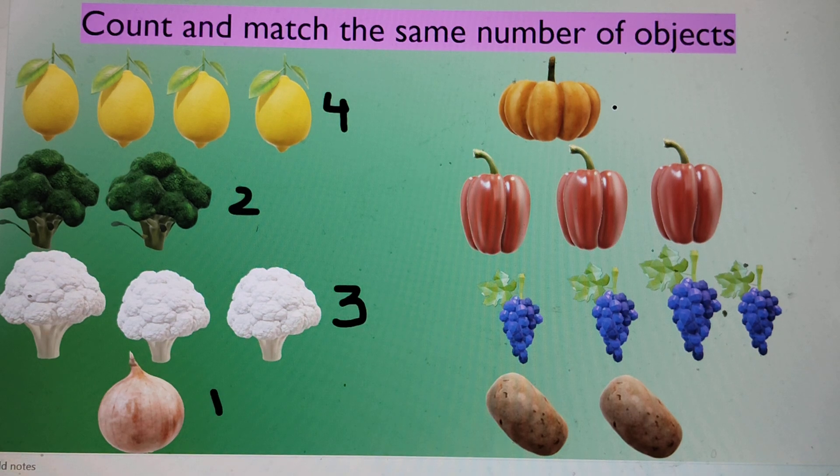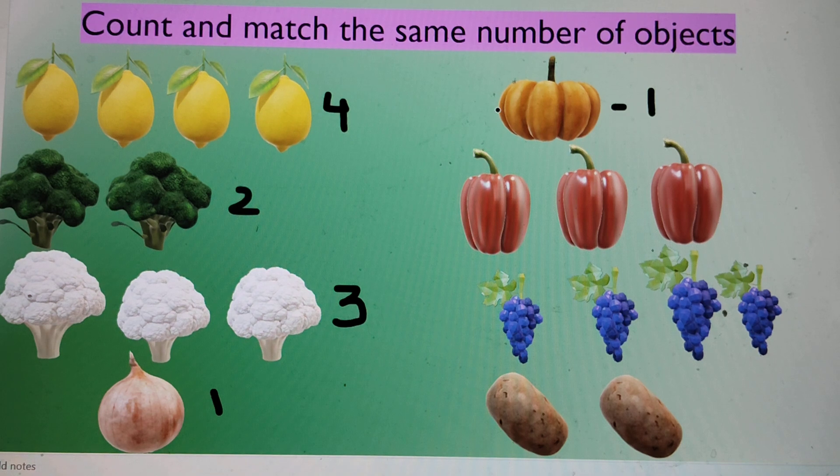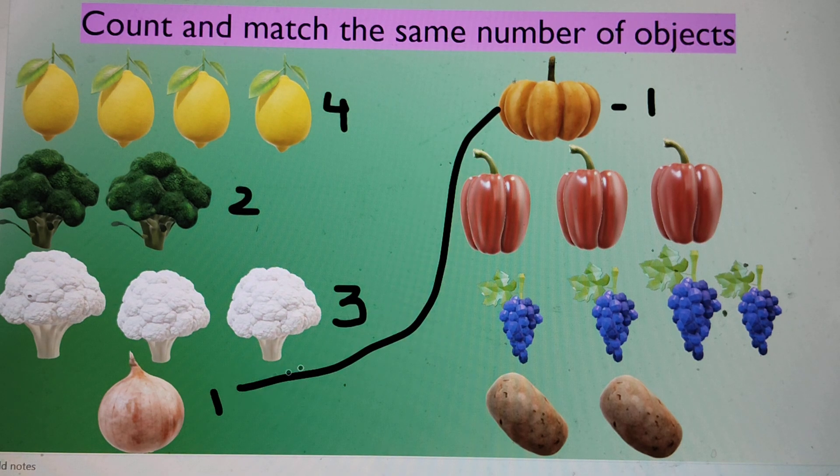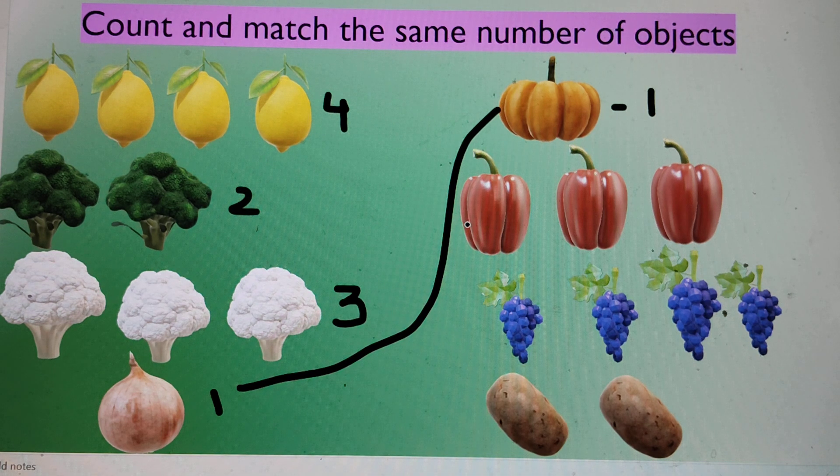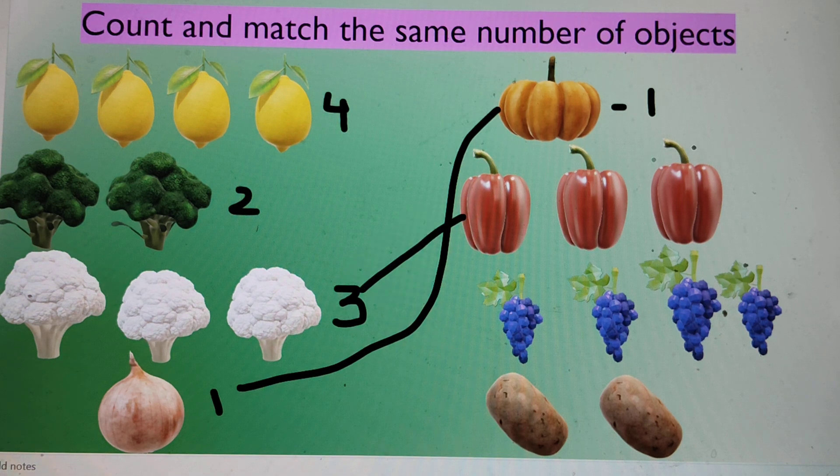Now let's count. This is one pumpkin. So we will match this one with onion. One, two, three. Three bell peppers. We will mark it or join it with this. This is number three.